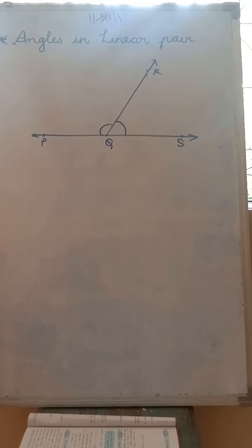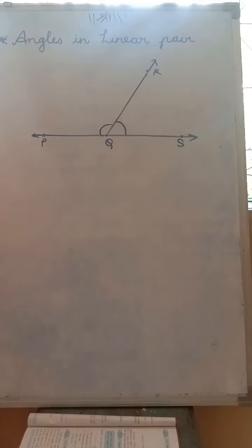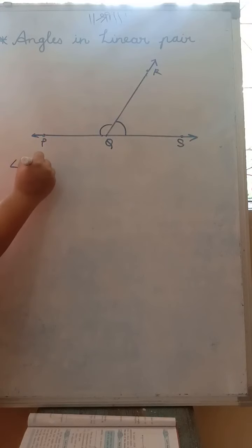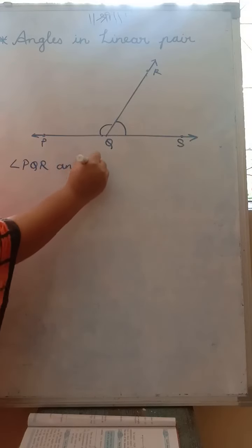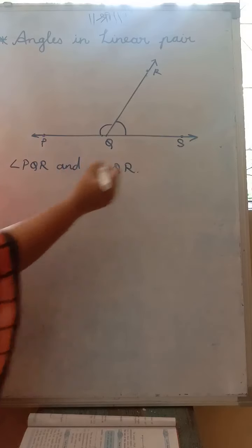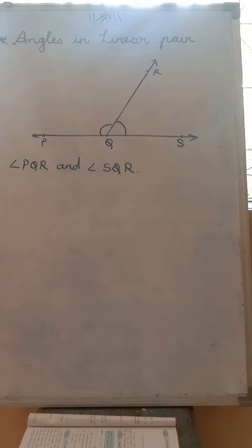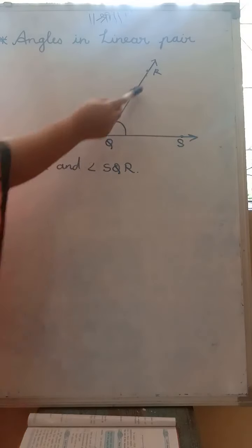How many angles are formed in this figure? We are having two angles in this figure. The names of the angles are angle PQR and angle SQR. So the two angles in this figure are PQR and SQR.